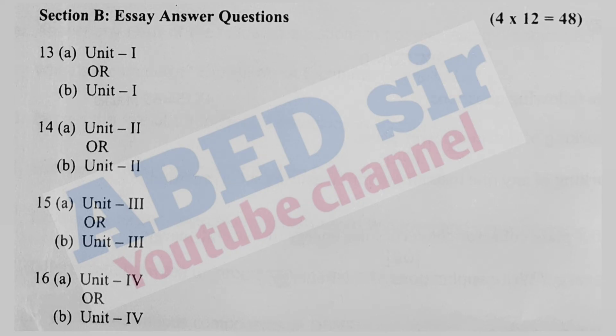Next, in part B, 4 mutual choice questions will be asked. From each unit, 2 questions is there. Out of these 2, you have to answer any one. And each one carries 12 marks. So, 4 twelves, 48 marks you will get from part B.